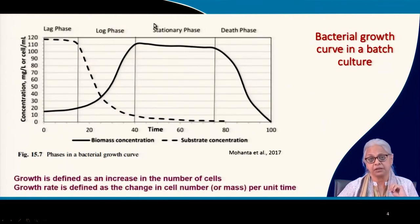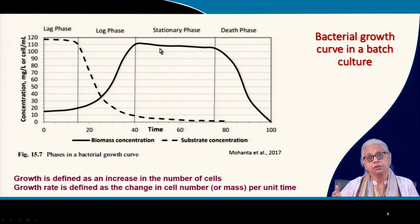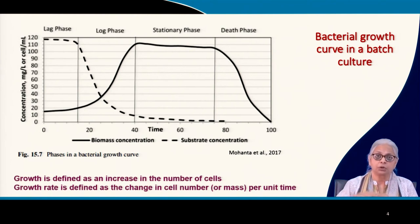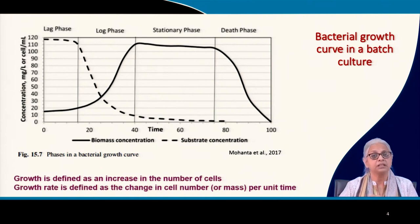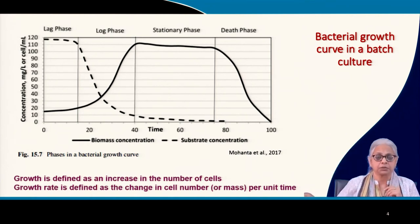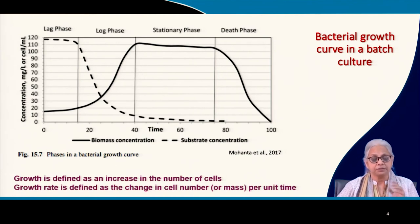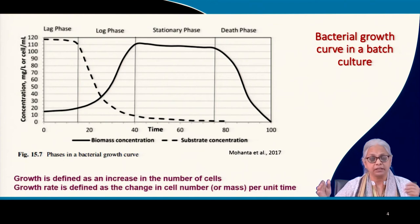Then we come to stationary phase. In stationary phase, growth rate is more or less equal to death rate, giving a horizontal line. In actual experiments, you may or may not see this clearly — in experiments with poor media, you may see the curve go up and then start going down almost immediately. The stationary phase can be very short or quite long.